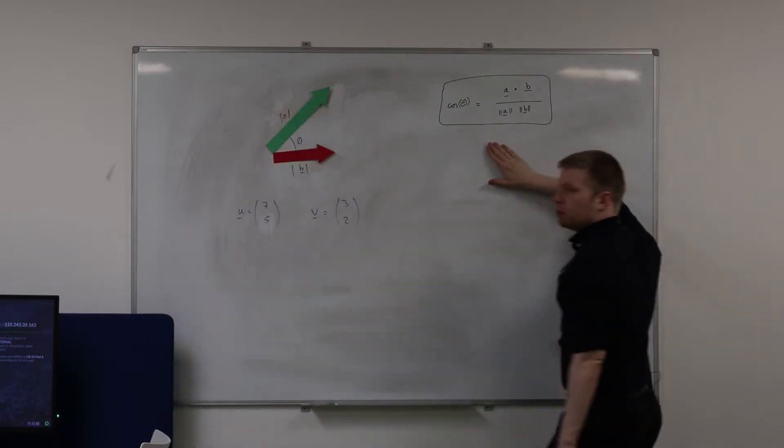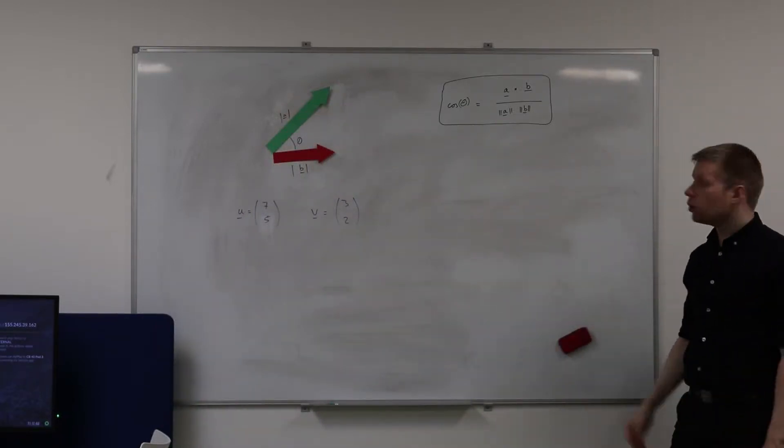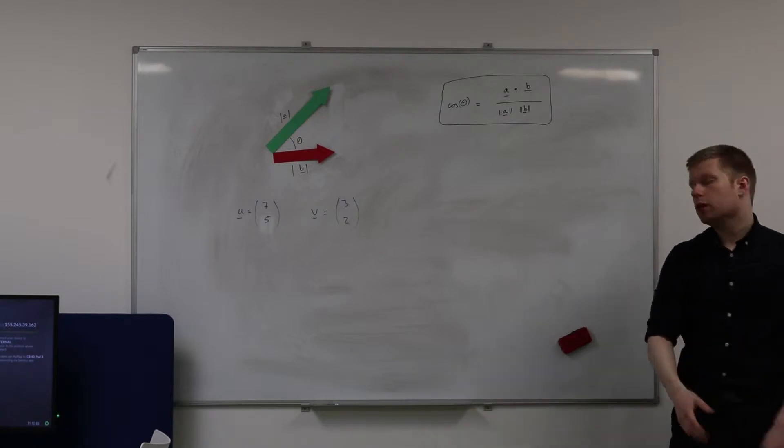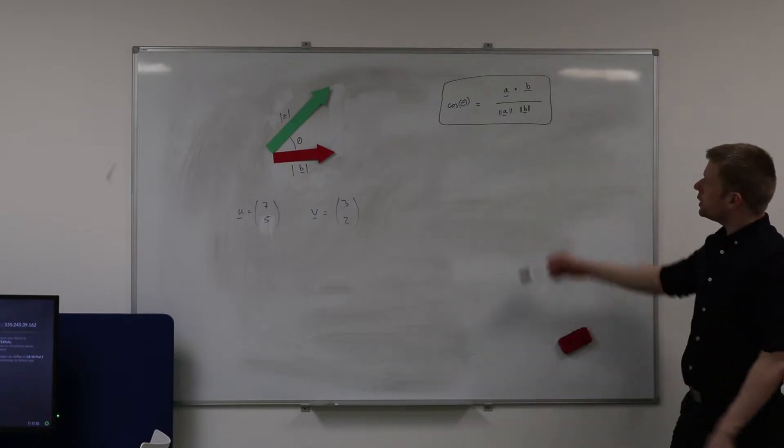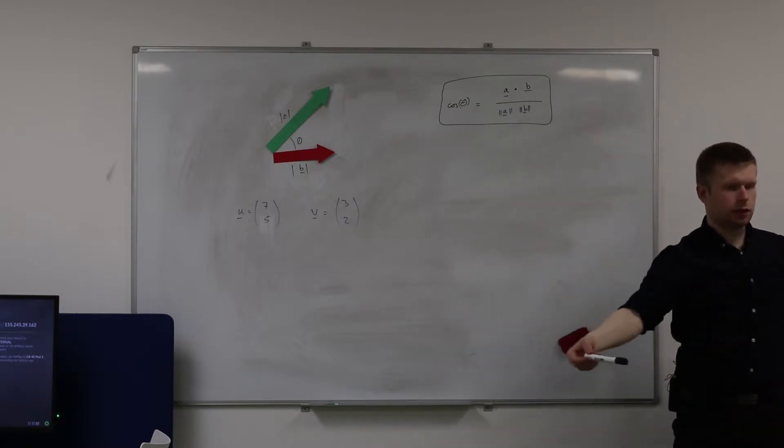So you're happy with this formula. It's just a formula, and I'll show you how to use it in just a second. But before we do, we need to understand this concept in a little bit more detail of multiplying two vectors together.